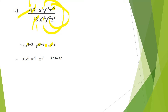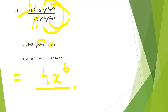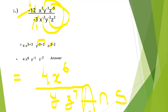For y: -3 + 2 = -1, so y⁻¹. For z: -5 - 2 = -7, so z⁻⁷. The answer is 4x⁶y⁻¹z⁻⁷. Alternatively, to write with positive exponents only, keep x⁶ in the numerator and move y and z to the denominator: 4x⁶ divided by yz⁷.